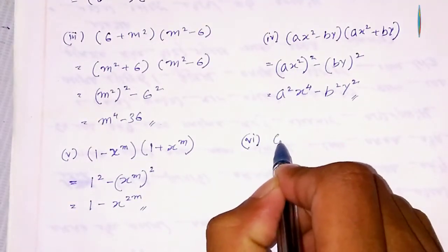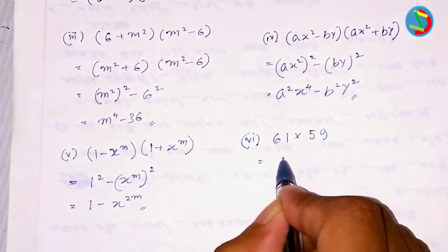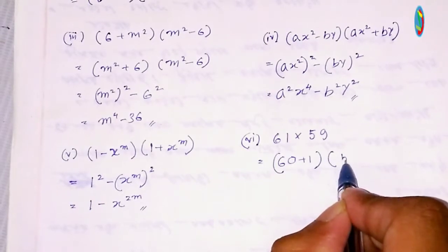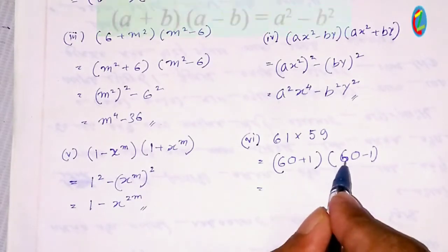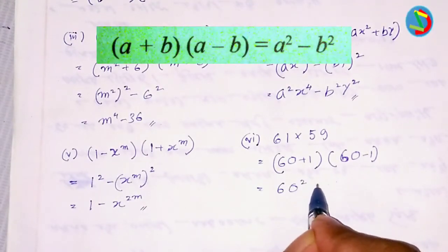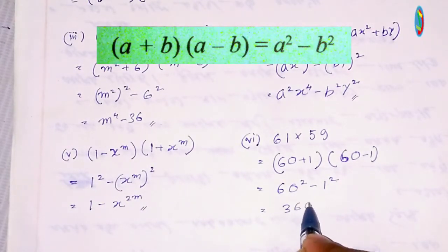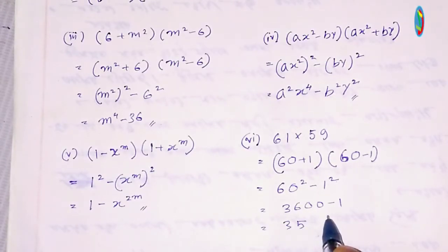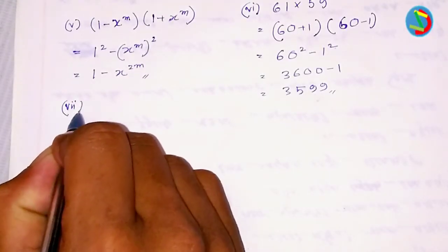Next is 61 times 59. We can write 61 as 60 plus 1, and 59 as 60 minus 1. So we get (60+1)(60-1) which equals 60² minus 1². 60 squared is 3600, minus 1 gives us 3599. That's the answer.